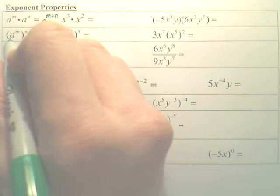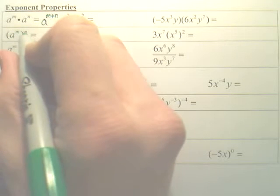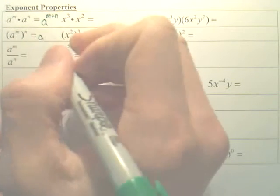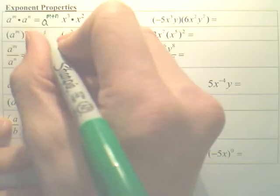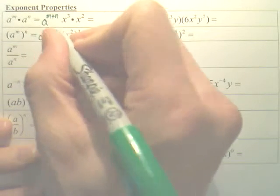When you have a power, A to some power, and you power that again, it's going to be A to the, instead of adding the powers, here you multiply them.